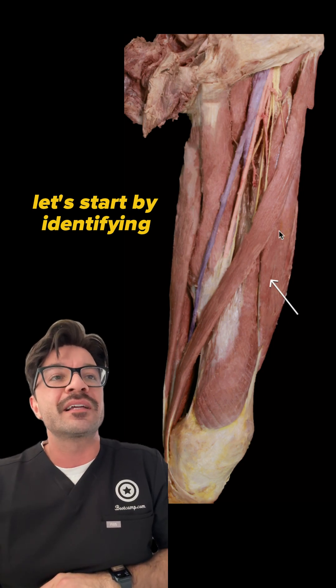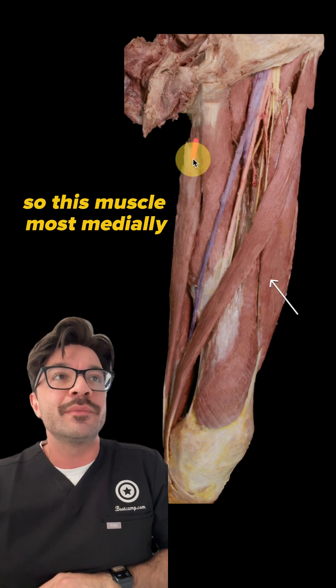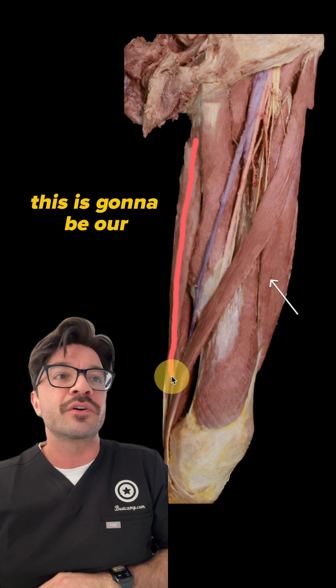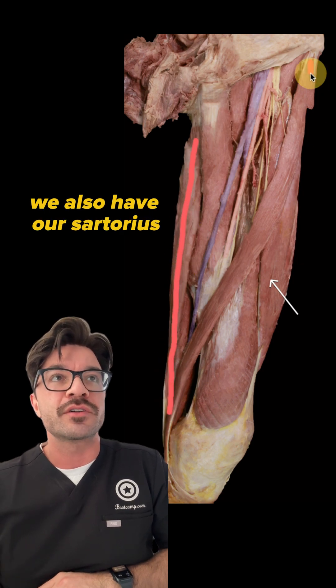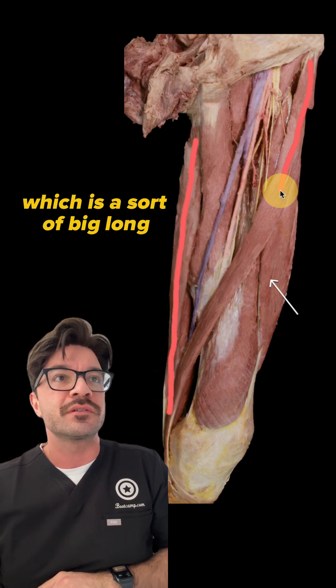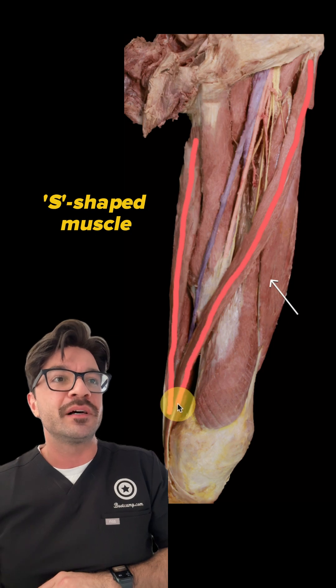Let's start by identifying some key structures. So this muscle most medially is going to be our gracilis muscle. We also have our sartorius, which is a sort of big, long S-shaped muscle.